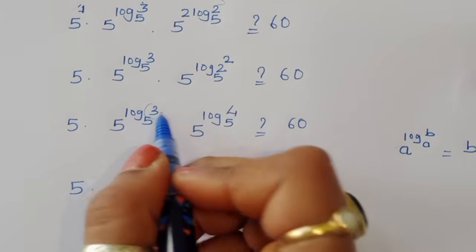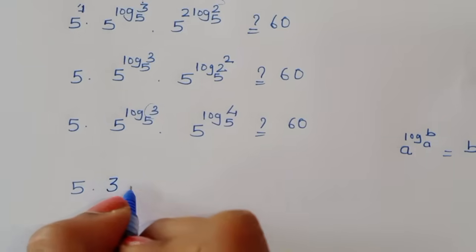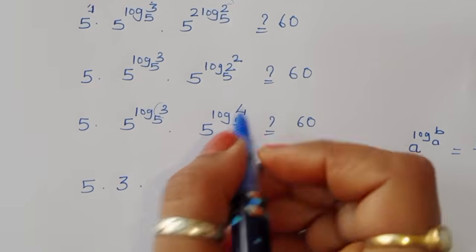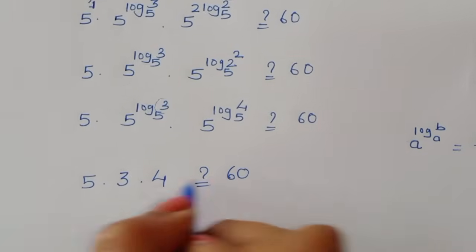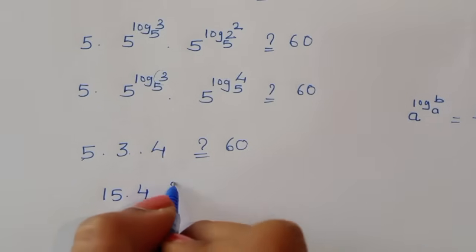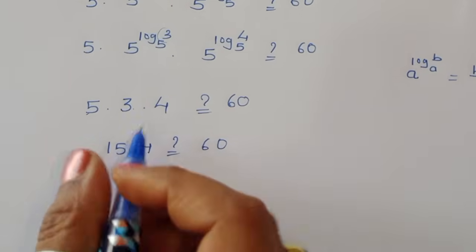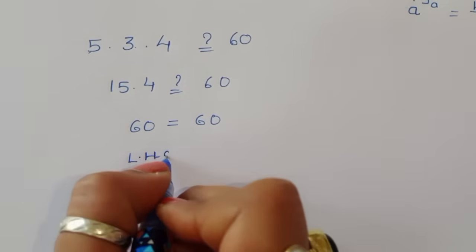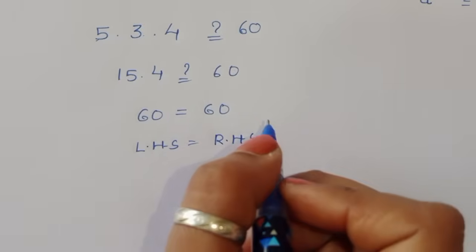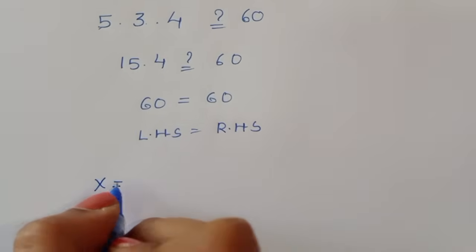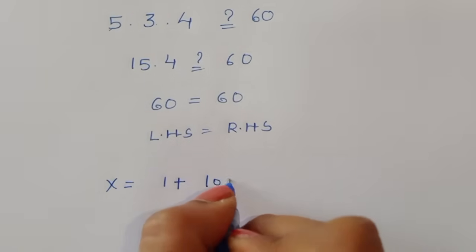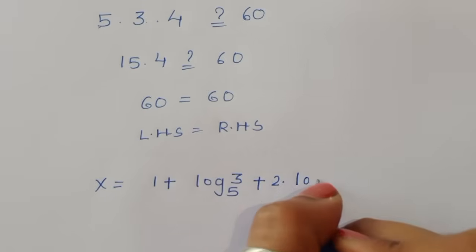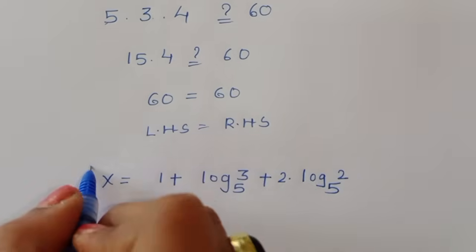Using the formula: a power log of b to the base a equals b. So 5 power log of 3 to the base 5 becomes 3, and 5 power log of 4 to the base 5 becomes 4. So we get 5 times 3 times 4, which is 5 times 12, equals 60. LHS equals RHS, so the value of x equal to 1 plus log of 3 to the base 5 plus 2 times log of 2 to the base 5 is the correct solution.